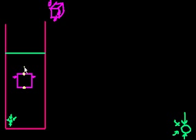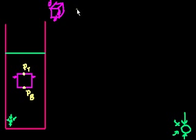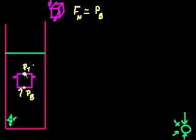So let's call the pressure on top Pt and the pressure on the bottom Pb. The net force on this cube is going to be the force acting upwards — which is the pressure at the bottom times the surface area of the bottom. The surface area of the bottom is d squared, since any surface of the cube is d squared.